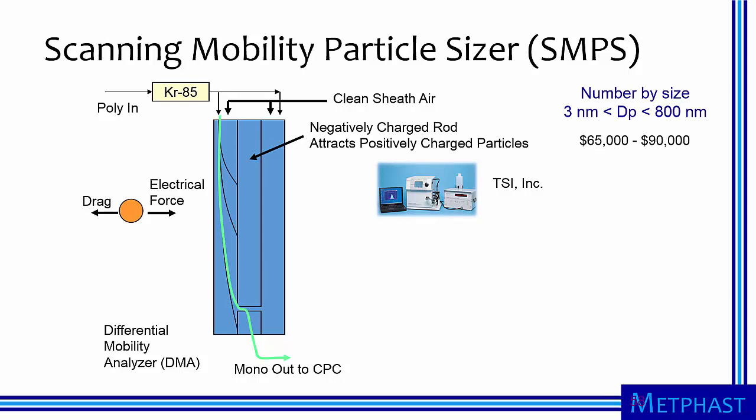The negatively charged rod attracts positively charged particles. Particles of one size pass through a slit in the lower section of the collection rod and are counted with a condensation particle counter, or CPC. This device can be used to measure particle number concentration by size from 3 nanometers to 800 nanometers.